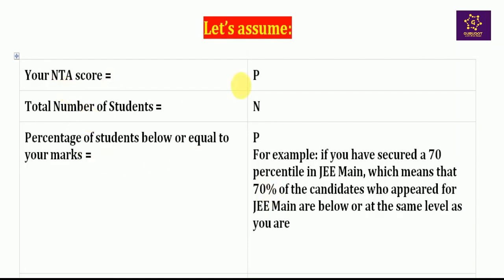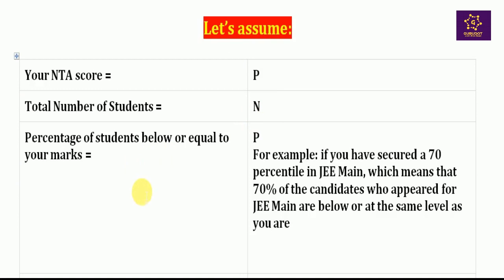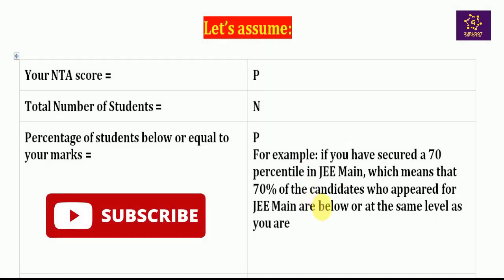Let's assume that your NTA score is P and the total number of students is N. The percentage of students below or equal to your marks is equal to P. For example, if you have secured 70 percentile in JEE Main, that means 70 percent of the candidates who appeared for JEE Main are below or at the same level as your marks.